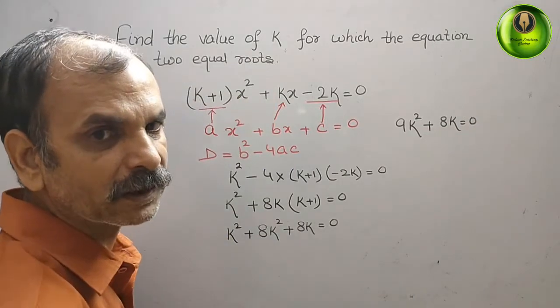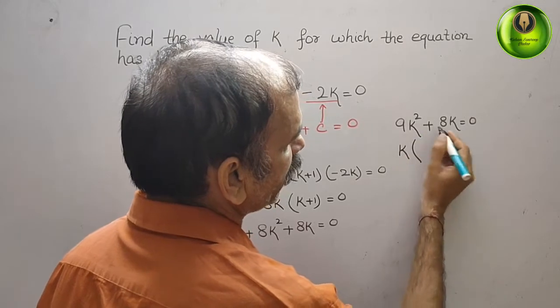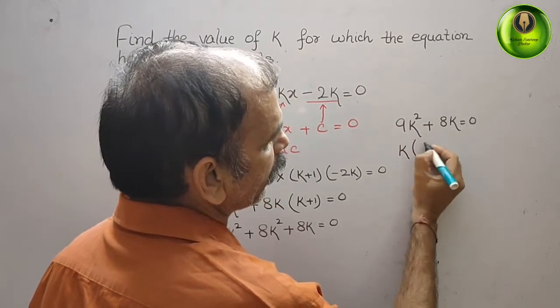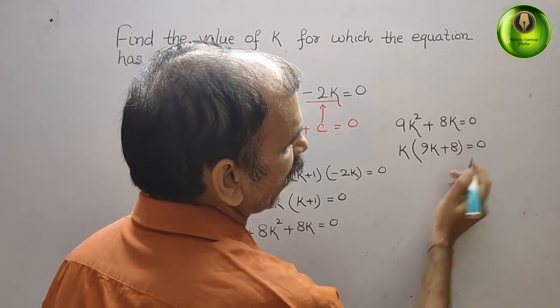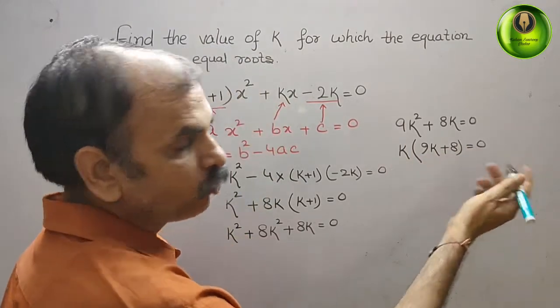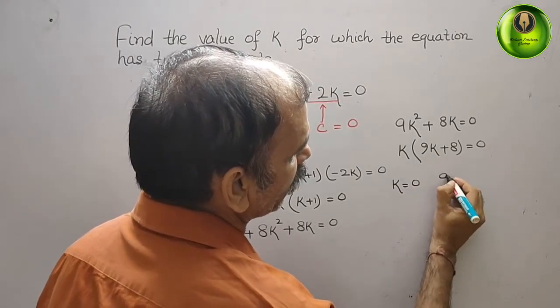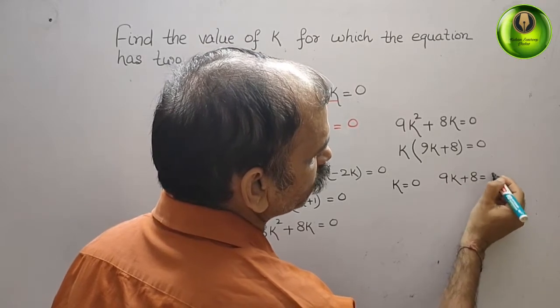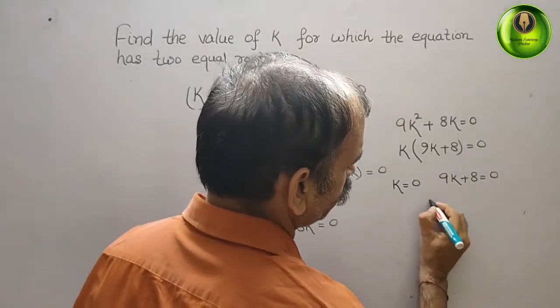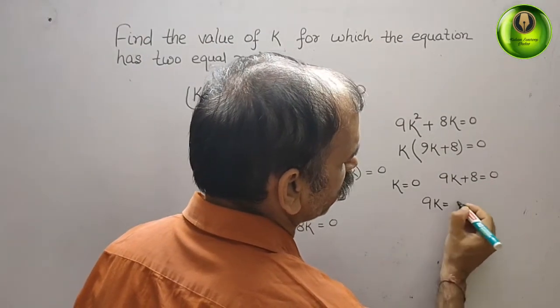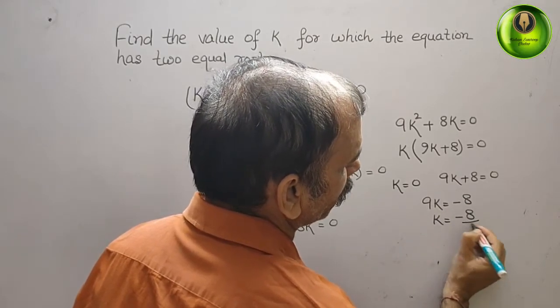Now find out the factors. You can see k is common. So here you will write k, and remaining is 9k + 8. That means k = 0 first. And second is 9k + 8 = 0. Now what is your k here? You will get 9k = -8, k = -8/9.